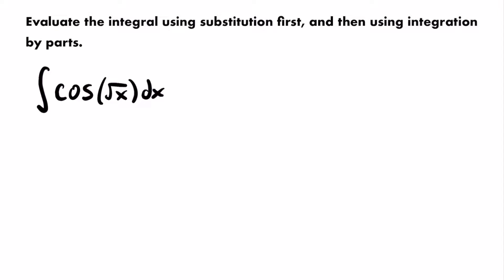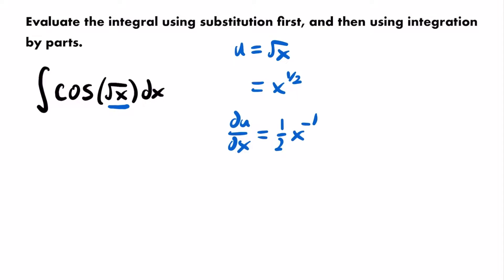Let's use u-substitution and let u equal the square root of x. Before taking the derivative, I'm going to rewrite the square root of x as x to the one-half power, so we can more easily apply the power rule for derivatives. We can multiply the exponent down and subtract one from that exponent, so the derivative du/dx will equal one-half times x to the negative one-half power.